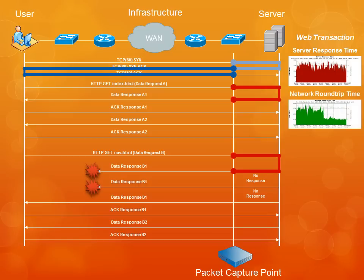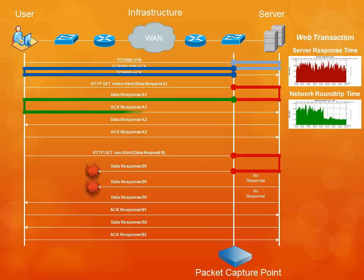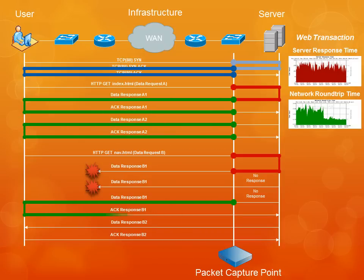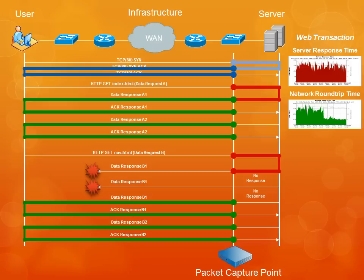The second core metric is network round trip time, which is defined as the amount of time required for the network to transmit a response packet to the user and for the acknowledgment to come back. This is measured by taking the delta between the transmission of a response packet and the receipt of an acknowledgment of that packet. Network round trip time differs from network connection setup time in that network round trip time packets will usually have payload, where network connection setup time packets will not. Network round trip time measures the health of the network and is unaffected by poor performance on the part of the server or the client, assuming the client's TCP offload engine is functioning properly.